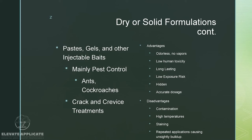Paste, gels, and other injectable baits are mainly used in structural pest control indoors for ants, cockroaches, and crack-and-crevice treatments. Advantages: odorless, no vapors, low human toxicity, long lasting, low exposure, hidden placement, and accurately dosed. Disadvantages: contamination risk; high temperatures can affect them or make them run; they can stain; and repeated applications could cause unsightly buildup.